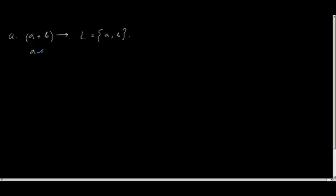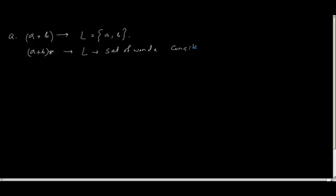Now, suppose I write it as (a plus b) star. What does this mean? Just tell me in plain English. This language means set of words consisting of either a or b, or a and b, including the null string.